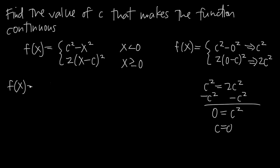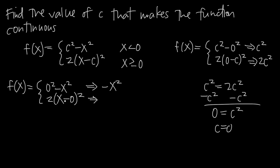With c equals 0, the function becomes: 0 squared minus x squared for the first piece, and 2 times the quantity x minus 0 squared for the second piece. Simplifying: 0 minus x squared becomes negative x squared. For the second piece, x minus 0 is x, and x squared times 2 is 2x squared. So negative x squared defines the function for x less than 0, and 2x squared defines it for x greater than or equal to 0.